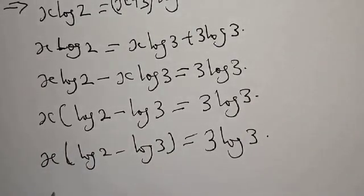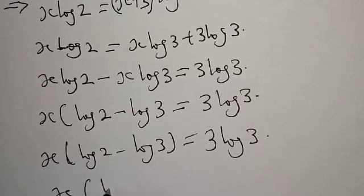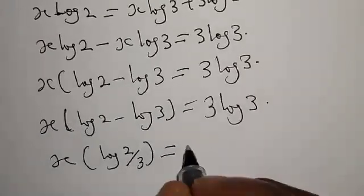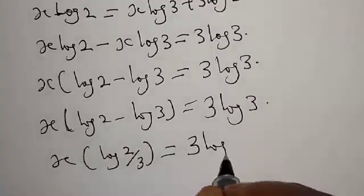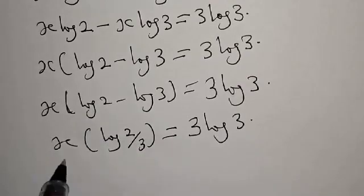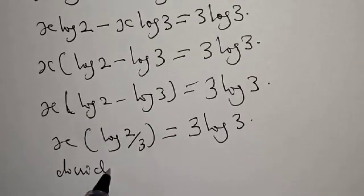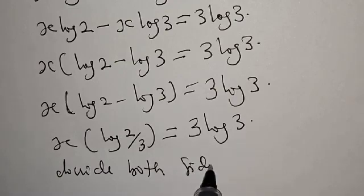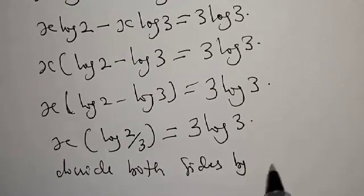This can be written as x into log 2 over 3 will be equal to 3 log 3. Let's divide both sides by log 2 over 3.